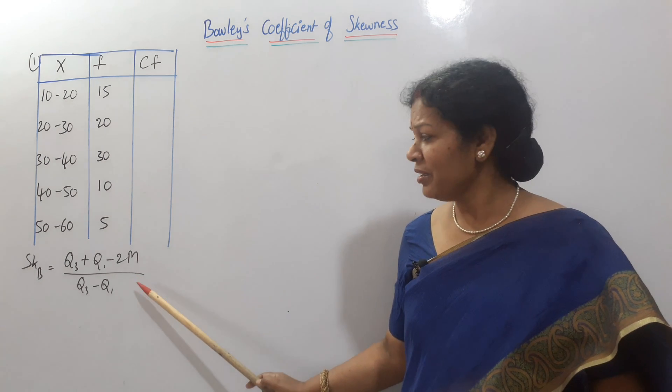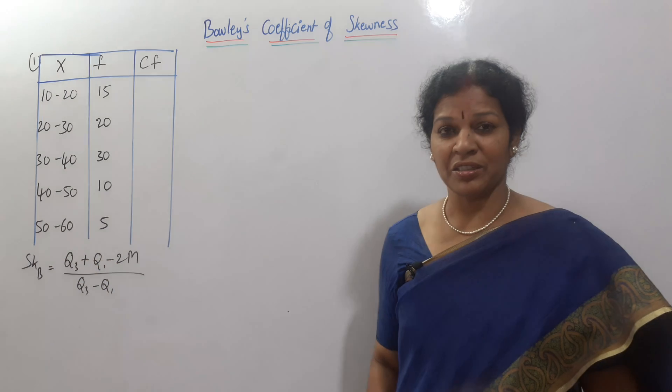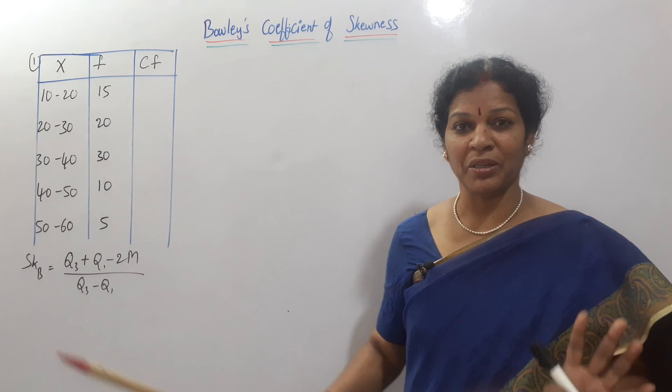So, what do we need? Median, Q1, Q3. All these 3 we need. Apply it in the formula, that is it.